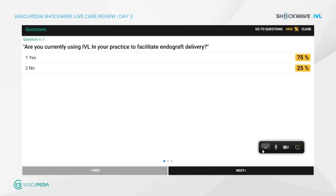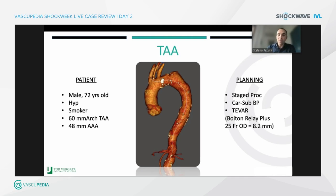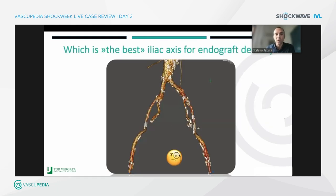75% are using IVL to facilitate endograft delivery — that's amazing. For an arch aneurysm of six centimeters, we planned a staged procedure with carotid-subclavian bypass and TIVAR. In this case, for the best option for the patient, we chose the Bolton Relay Plus, which is 25 French outer diameter, meaning more than 8.2 millimeters.